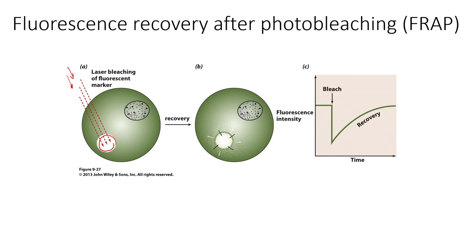But over time, because you have free diffusion of all the proteins and the lipids in this bilayer, we have what you call recovery, where proteins that are still green from elsewhere in the cell are able to move into this area, and some of the bleached-out proteins are able to diffuse away from the bleached area. So ultimately, over time, that bleached dot will eventually recover back to its normal green appearance.